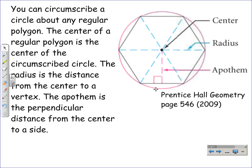The center of the regular polygon is the center of the circumscribed circle. So when I refer to the center of the polygon, it's the point in the middle, equidistant from the vertices. The radius is the distance from the center to a vertex, so in a hexagon we have six radii because there's six vertices.